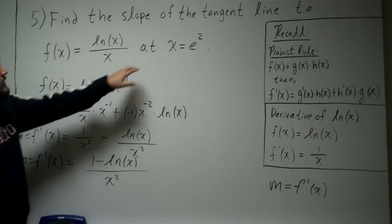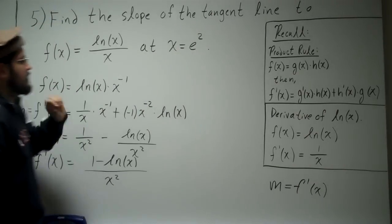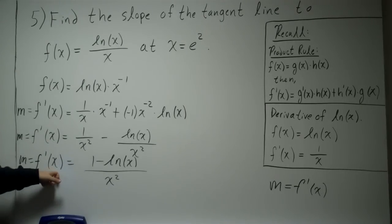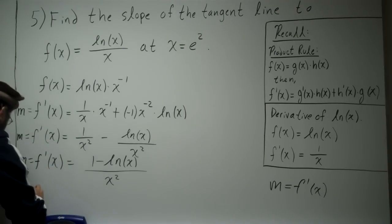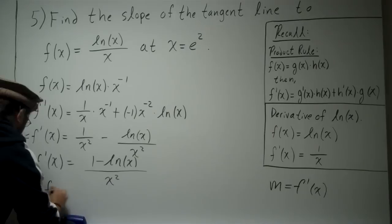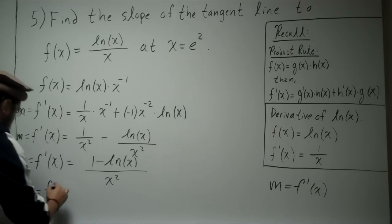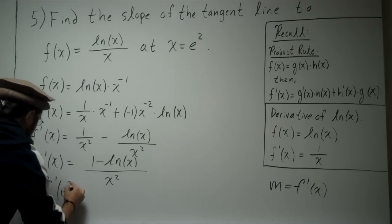Okay, so now they give us that x equals e squared, so we need to find the slope at e squared. So go ahead and plug in e squared here. Okay, and plug in e squared.